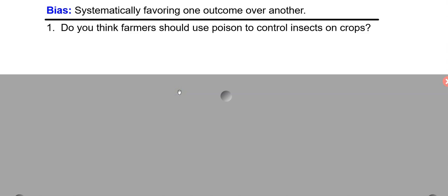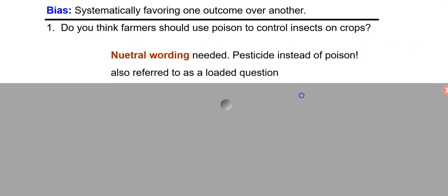This question may not be worded the best. It says, do you think farmers should use poison to control insects on crops? Sometimes we refer to this as a loaded question, but you really need more neutral wording here. Like, use words like pesticide instead of poison. Poison implies, it just has some bad connotations to that. And you're going to get people to go, oh yeah, that doesn't sound, we shouldn't use poison. But pesticide, oh well, I guess we should use, you might have a more neutral or fair way to ask that question. So using a word like poison would cause bias in this question.